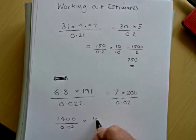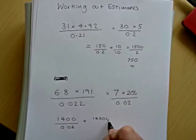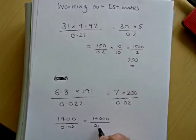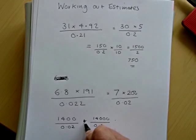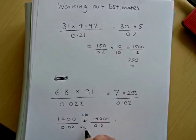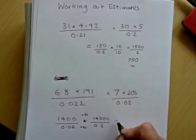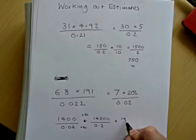So if we times it by 10, we get 14,000 over 0.2. And we have to times it again by 10. And if we times it by 10 again, we get another 0 on the end.